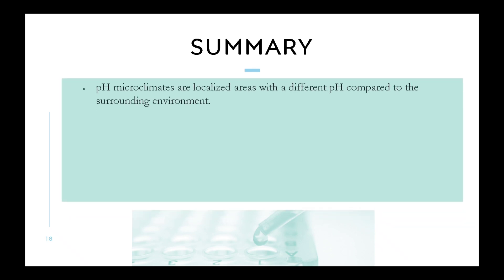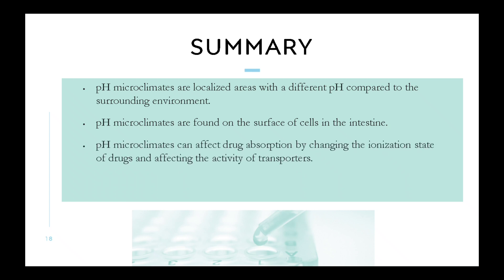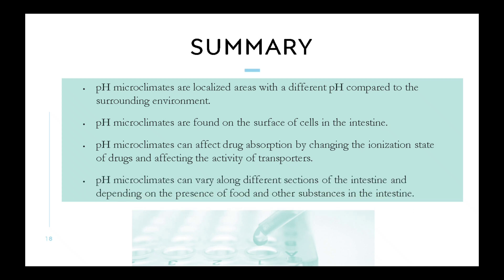Summary: pH microclimates are localized areas with a different pH compared to the surrounding environment. They are found on the surface of cells in the intestine. pH microclimates can affect drug absorption by changing the ionization state of drugs and affecting the activity of transporters. pH microclimates can vary along different sections of the intestine and depending on the presence of food and other substances in the intestine.